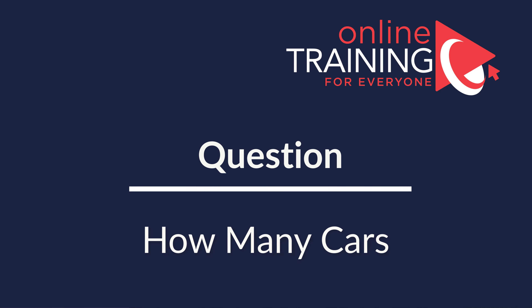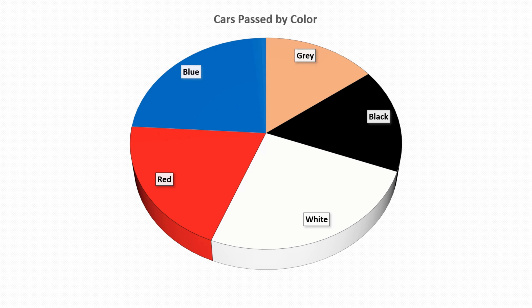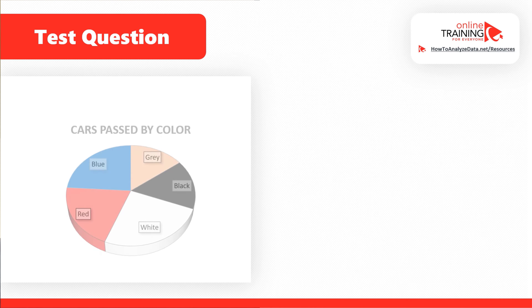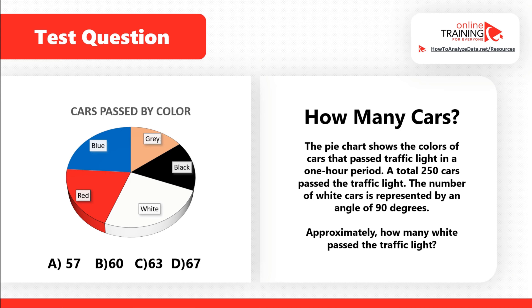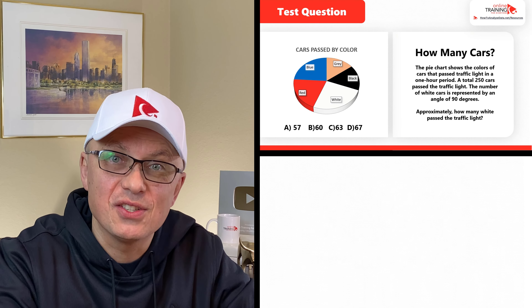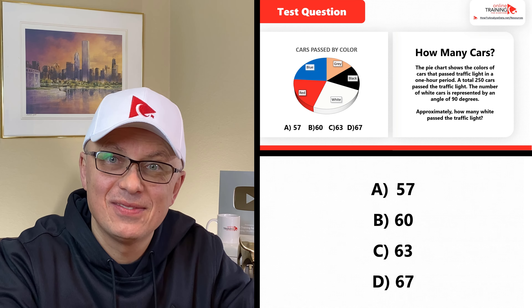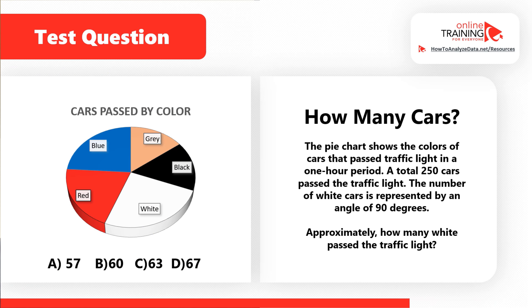A lot of times you get tested on your ability to analyze charts and graphs. In this question, we see a pie chart broken down into parts in different colors — white, red, blue, gray, and black. The pie chart shows the colors of cars that passed a traffic light in one hour. A total of 250 cars passed the traffic light. The number of white cars is represented by an angle of 90 degrees. Approximately how many white cars passed? Choices are A — 57, B — 60, C — 63, and D — 67.